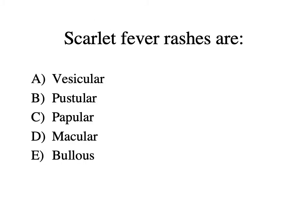Review question: Scarlet fever rashes are — A: vesicular, B: pustular, C: papular, D: macular, E: bullous. The answer is D, macular. It's a red macular rash that blanches when you touch it — turns white — but returns to that red color. It has no fluid associated with it, but it's red and can be spread on the body.